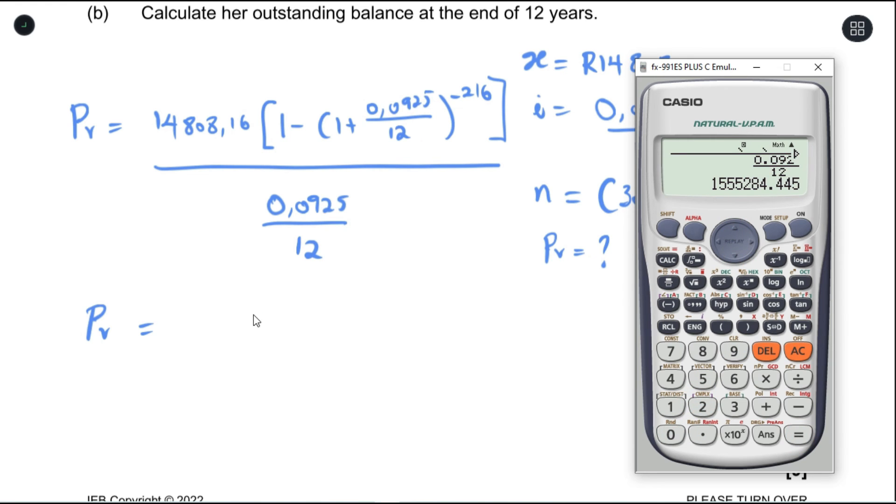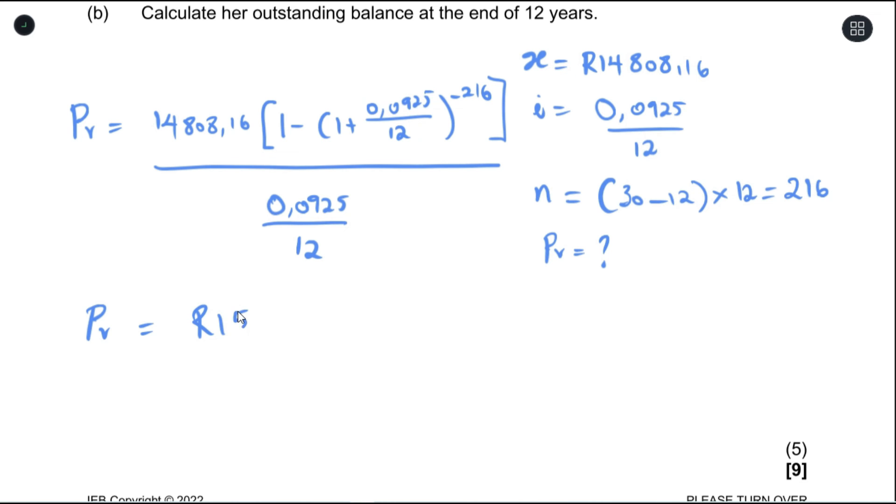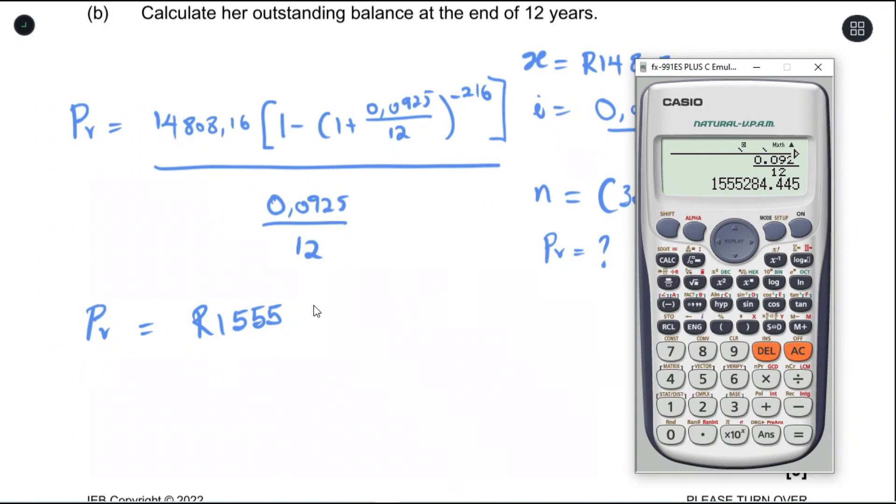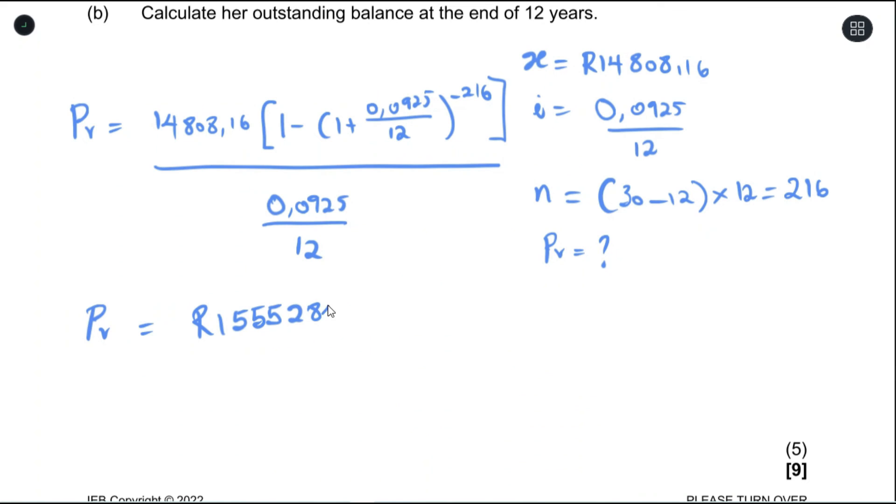So after 12 years the outstanding balance would be 1.5 million. That is 1,555,284.45 - one million five hundred and fifty five thousand two hundred eighty four rand and forty five cents. So this is the amount of money that will still be left after paying for 12 years.